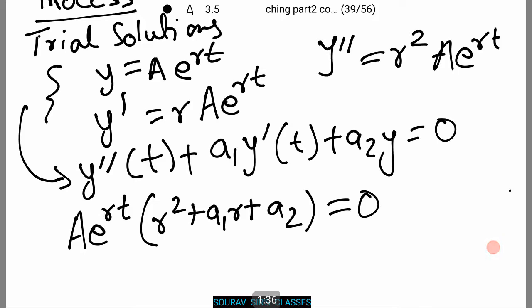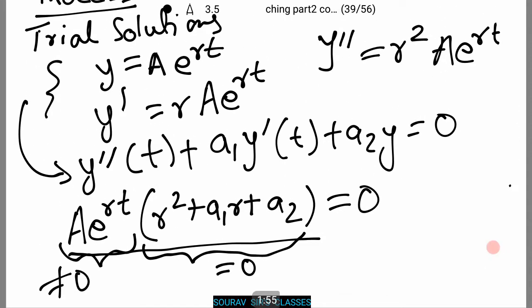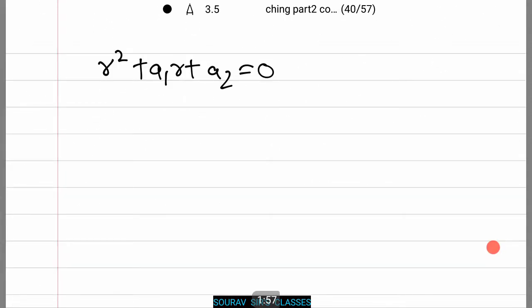Notice that in order for this equation to be 0, the part r squared plus a₁r plus a₂ needs to equal 0, since Ae to the power rt can never equal 0. Thus we obtain a quadratic equation: r squared plus a₁r plus a₂ equals 0.